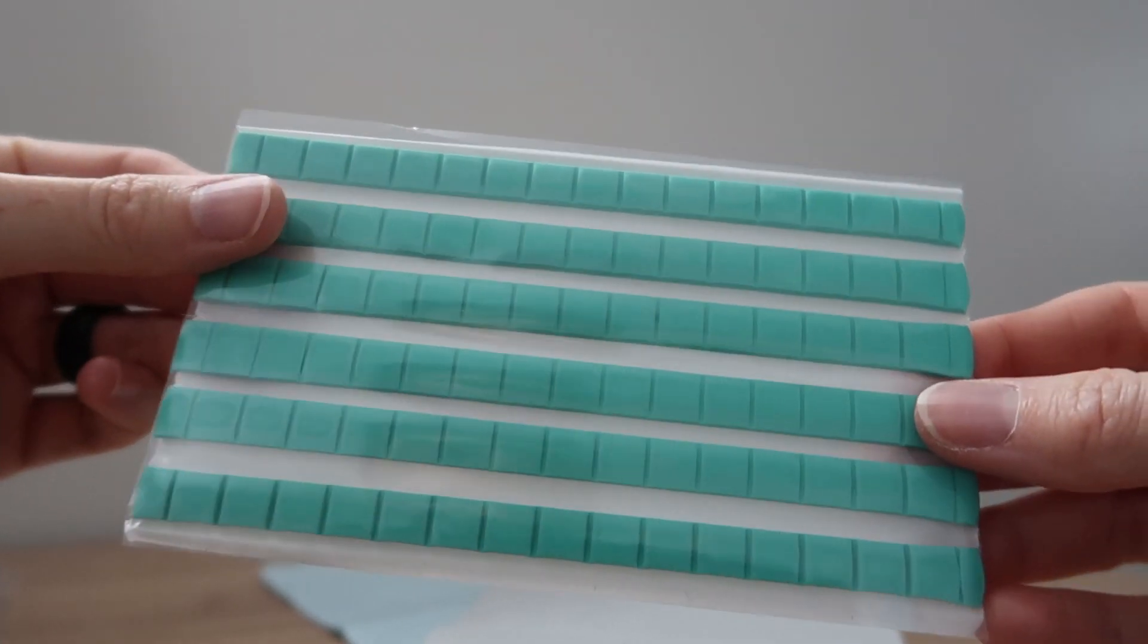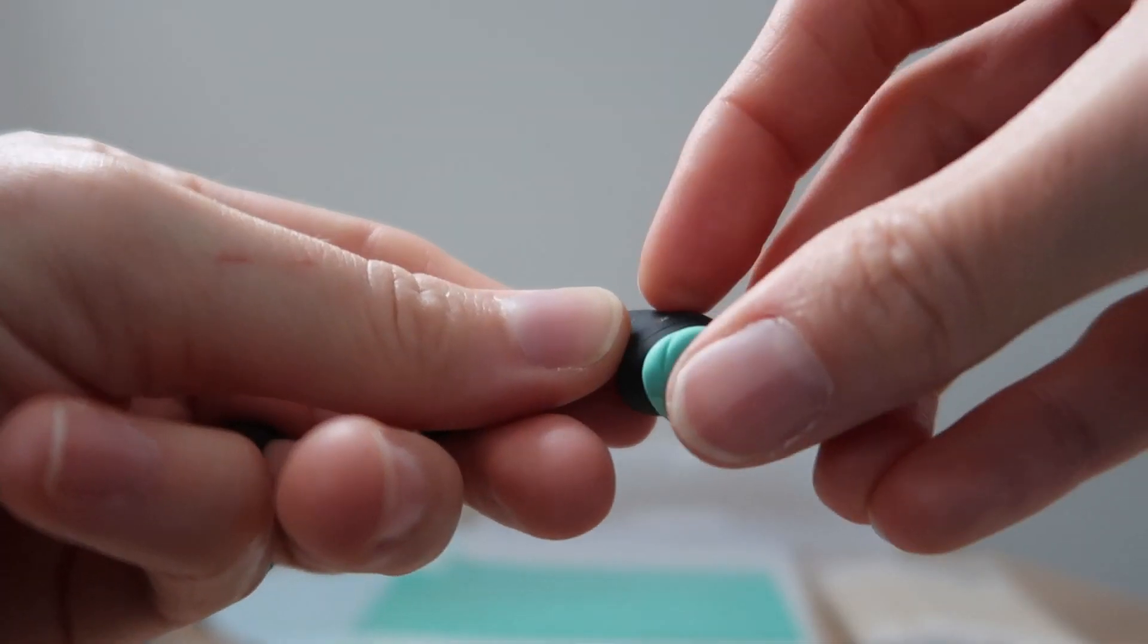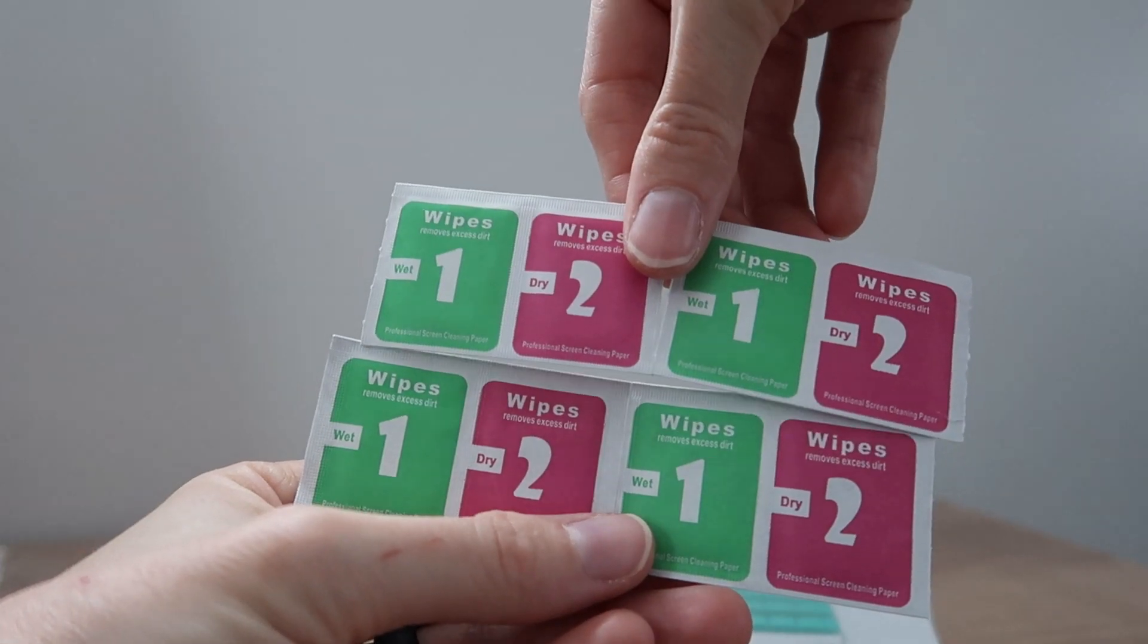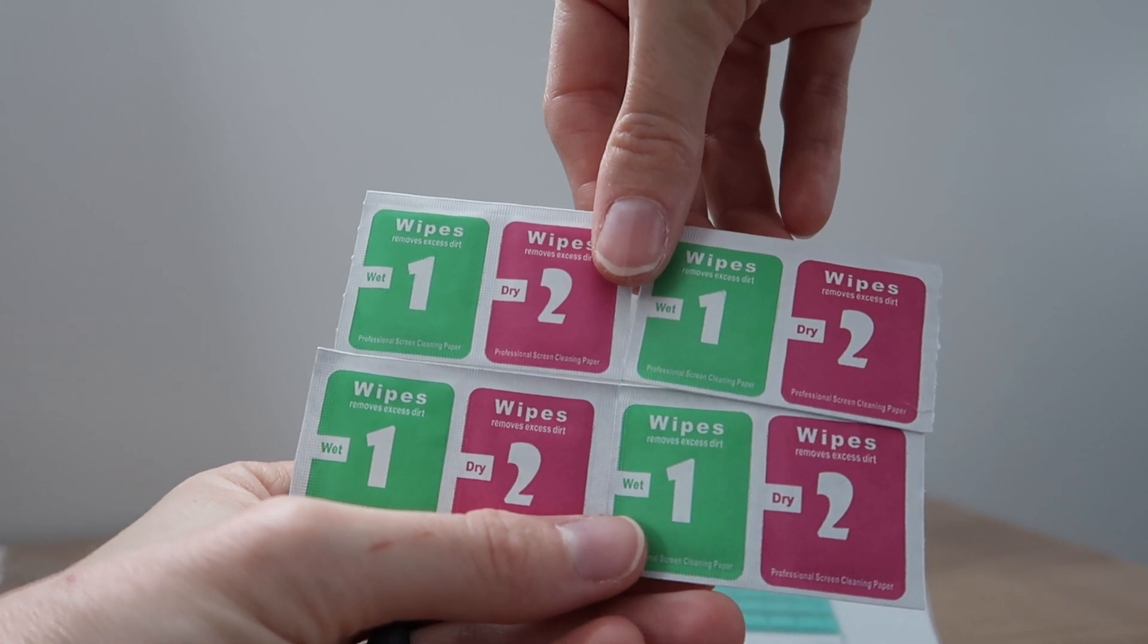It comes with 96 cubes of cleaning putty. This will clean out the earwax. It comes with four wet wipes and four dry wipes.